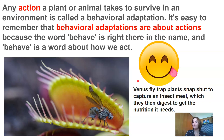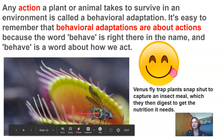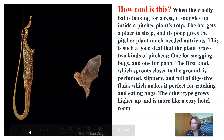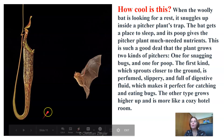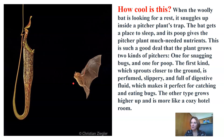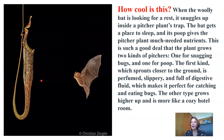Here's a good example of a behavioural adaptation. A Venus flytrap plant snaps shut to capture an insect meal, which it then digests to get the nutrition it needs. When the woolly bat is looking for a resting place, it snuggles up inside a pitcher plant's trap. The bat gets a place to sleep, and its poop gives the pitcher plant much-needed nutrients. This is such a good deal that the plant grows two kinds of pitchers — one for snagging bugs and one for the bats.